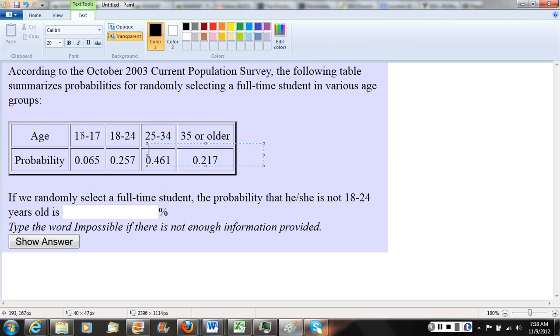And here's the question they're asking. They want to know if they randomly select a full-time student, what's the probability that the person they select is not 18 to 24 years old? So we're seeing that keyword not, which lets us know we can use the complement rule.